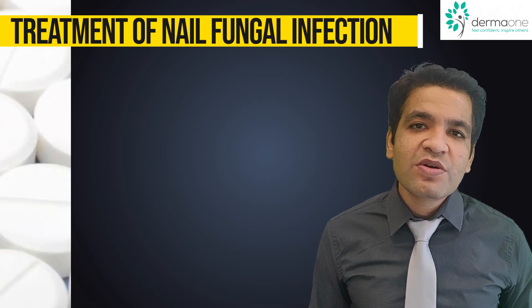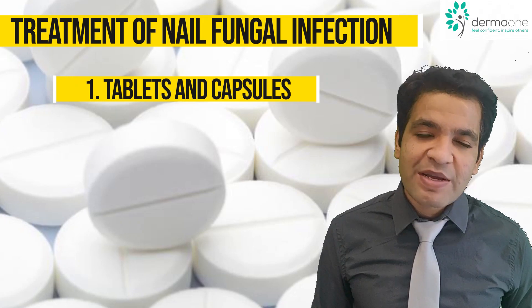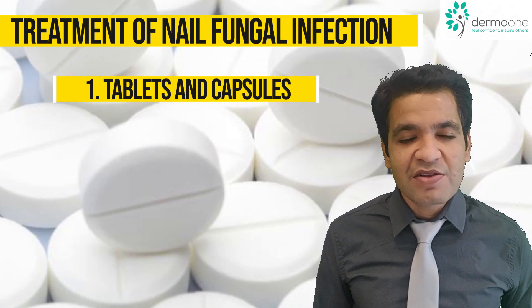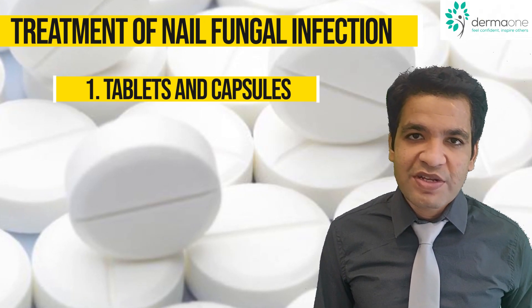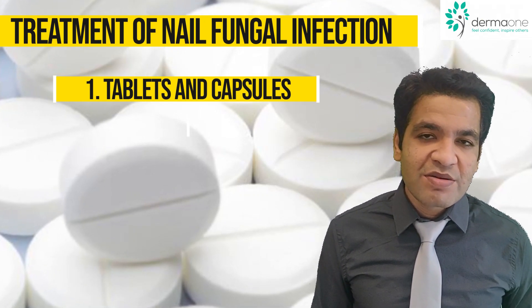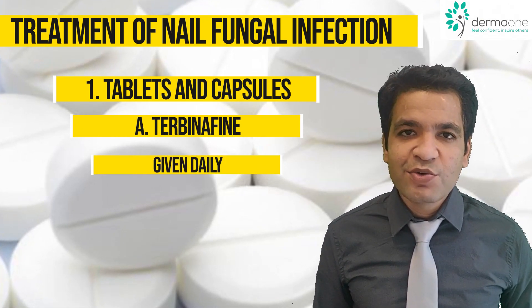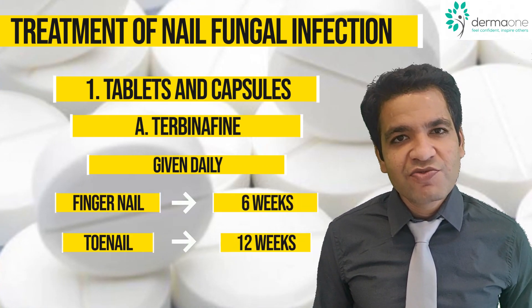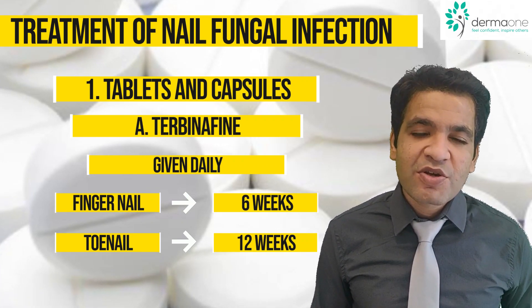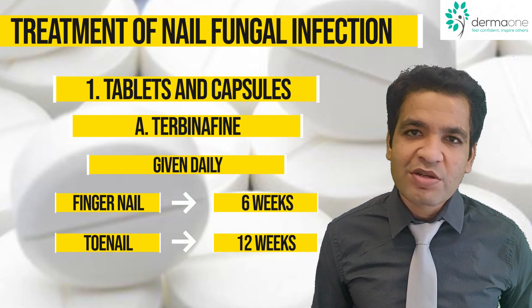Oral tablets or capsules form a very important part of treatment. There are mainly four types of medicines used for treating nail fungal infection: Terbinafine, Itraconazole, Fluconazole, and Griseofulvin. Terbinafine comes in tablet form and is given as a daily dose — usually for six weeks for fingernail infections and around 12 weeks for toenail infections. This is because a fingernail replaces itself faster, while the toenail typically takes longer to replace.